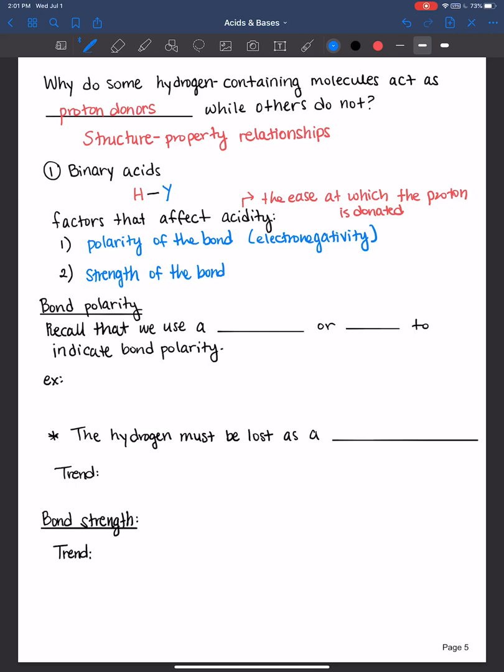So let's first discuss bond polarity. Remember that we use a dipole arrow or the partial positive partial negative designation to indicate bond polarity if we have a polar covalent bond. So it's really important that you still feel comfortable using mainly the partial positive and partial negative designations for something that has a polar covalent bond. And now we're kind of zoning in on hydrogen containing molecules.